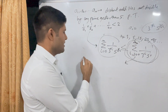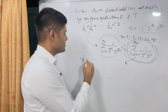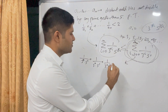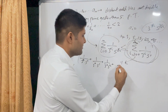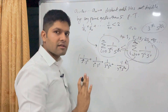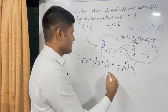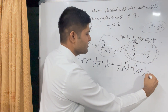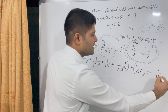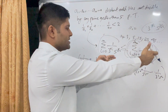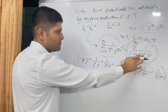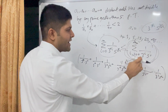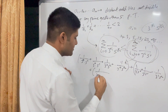Let's compute what this double sum is. It expands as: (3^0 · 5^0) + (3^0 · 5^1) + ... + (3^0 · 5^n) + (3^1 · 5^0) + (3^1 · 5^1) + ... and so on, partitioning by first taking i = 0 and summing all j from 0 to infinity, then taking i = 1, and continuing up to infinity.